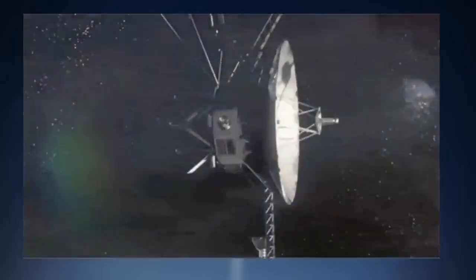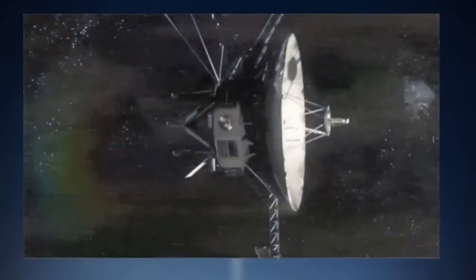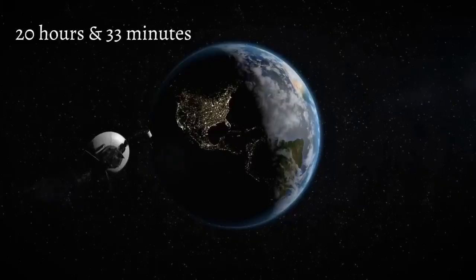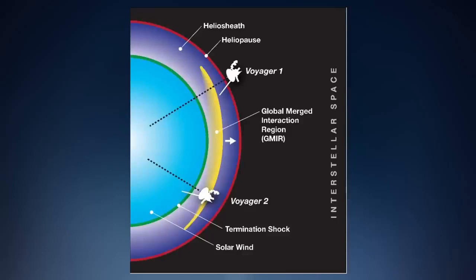According to the agency, Voyager personnel will continue to investigate the problem and attempt to fix it or adapt to it. That is a slow process, because a signal from Earth takes 20 hours and 33 minutes to reach Voyager 1. Receiving the spacecraft's response takes the same amount of time.